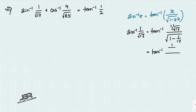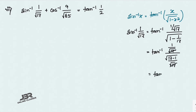In the denominator: √(1 − 1/17) = √(16/17). The √17 terms cancel, giving tan⁻¹(1/√16) = tan⁻¹(1/4).